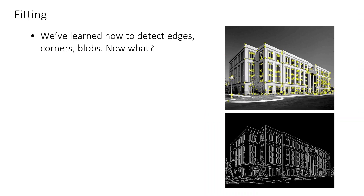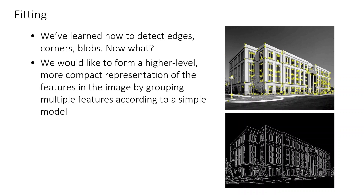In the previous lessons we learned about how to detect edges, corners and blobs. Now we must think about the next step. We would like to form a higher-level, more compact representation of the features in the image by grouping multiple features according to some simple model.